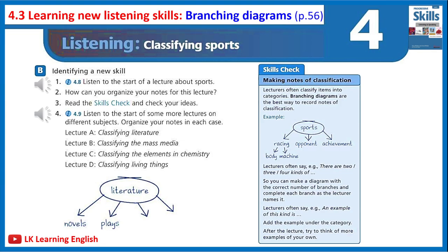Exercise B1: Listen to the start of a lecture about sports. The speaker classifies sports into three categories: racing sports (trying to go faster than another person), opponent sports (an opponent is someone you play against), and achievement sports (achievement means reaching a certain level, a good level).